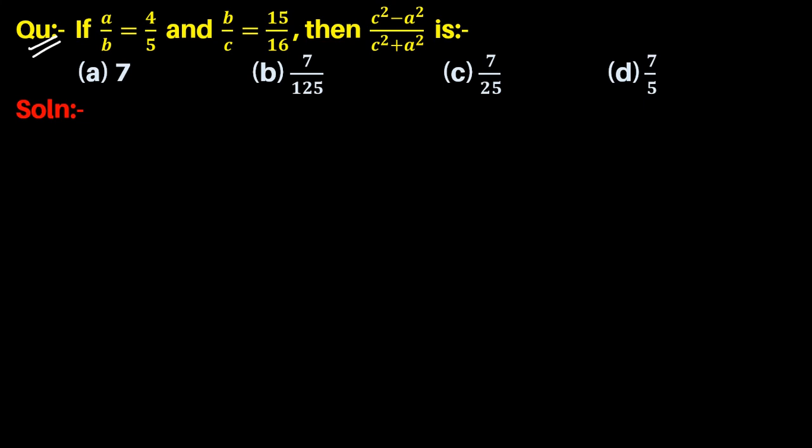The question is: if a upon b equals 4 upon 5, and b upon c equals 15 upon 16, then find c squared minus a squared upon c squared plus a squared.